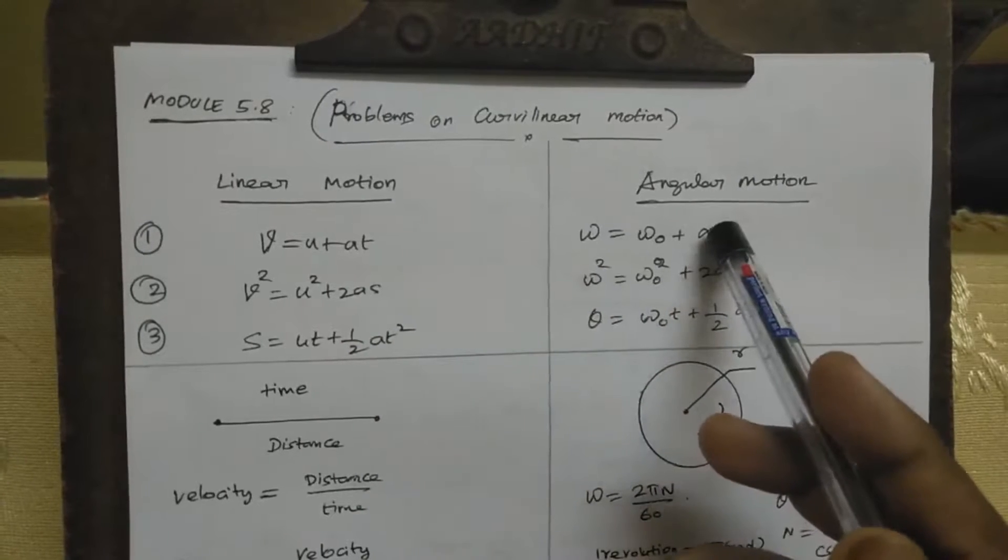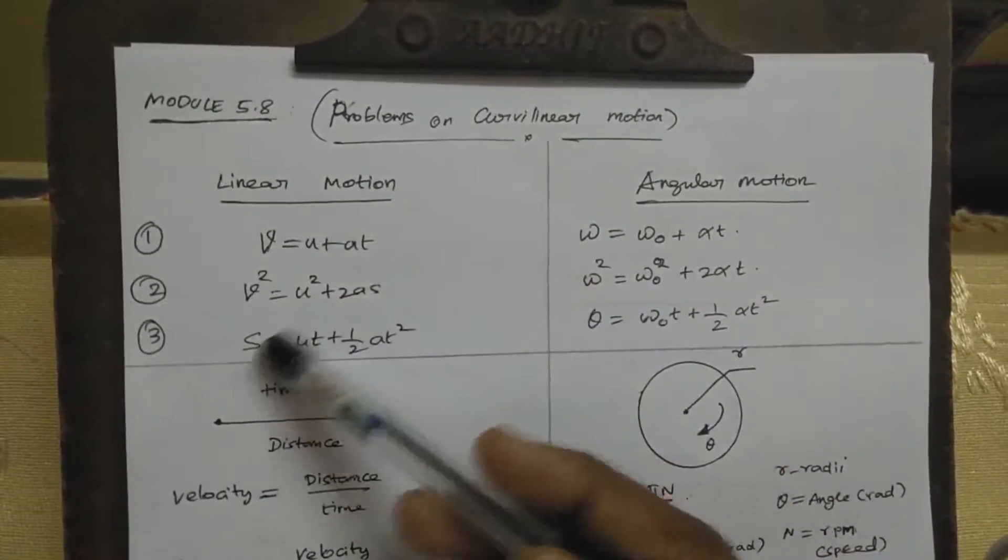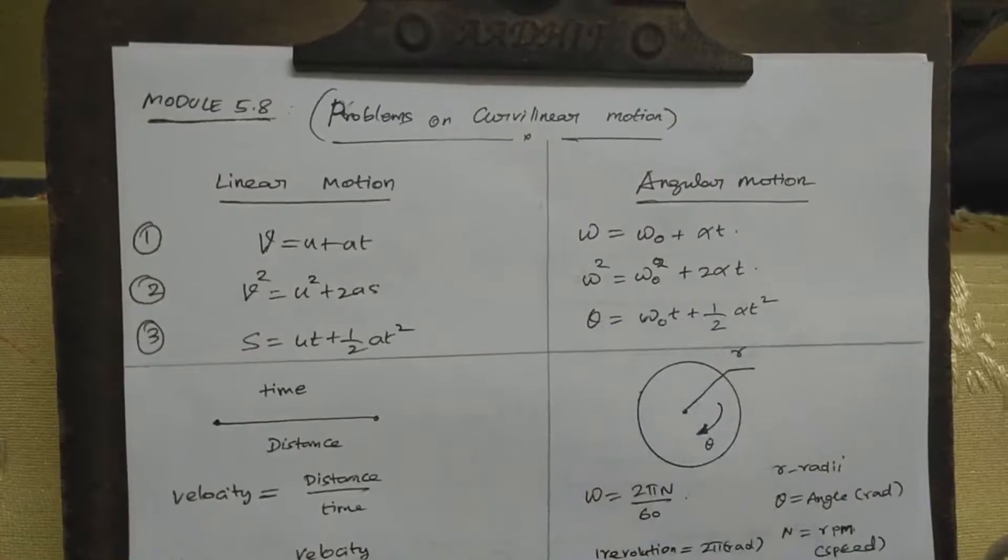α is angular acceleration. This is normal acceleration, this is angular acceleration. S is the distance, T is the distance, that is an angle.